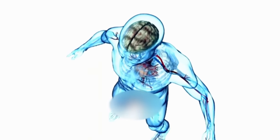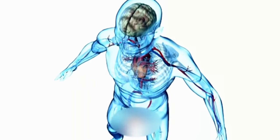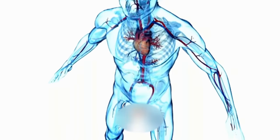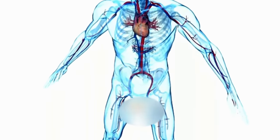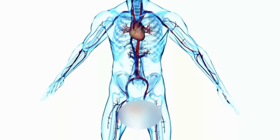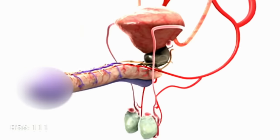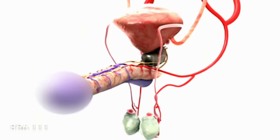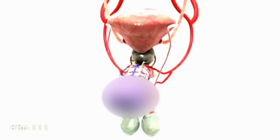The penis has a long shaft and an enlarged tip called the glans penis. The male penis is made of two different tissues: hard erectile tissue and soft spongy tissue.